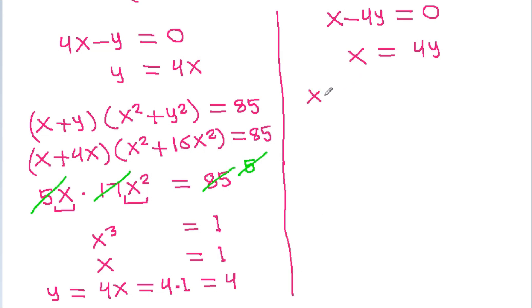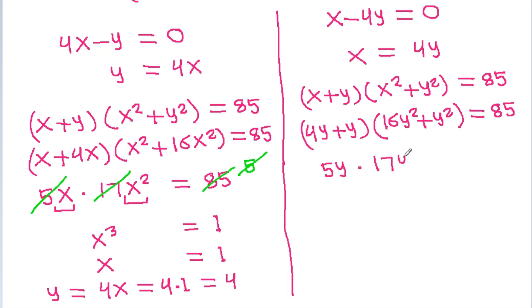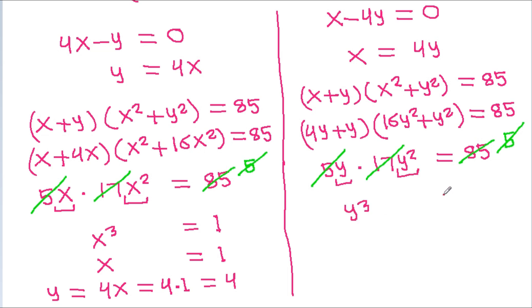For the case x = 4y: substituting into equation 1, (x + y)(x² + y²) = 85 becomes (4y + y)(16y² + y²) = 85, so 5y times 17y² equals 85. Since 17 times 5 is 85, they cancel, giving y³ = 1, so y = 1 and x = 4.